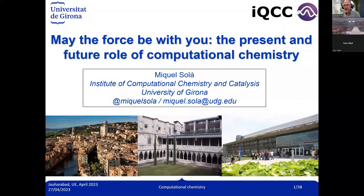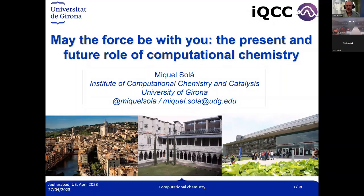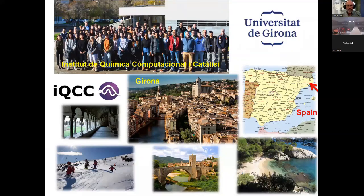It's a big pleasure to be here, so thank you very much for the invitation. Today I will talk a little bit about computational chemistry and give a couple of examples of what we have done in our institute. Our institute of computational chemistry and catalysis is located in the University of Girona — a small city of 100,000 inhabitants close to the French border and the Mediterranean Sea.